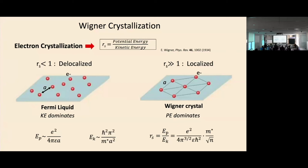Quantitatively, the potential energy scales with e² over a, modified by the dielectric constant, where a is the characteristic distance between electrons. The kinetic energy scales with p² over 2m, so it scales with 1 over a². It is easy to show that R_S has an expression proportional to the effective mass of electrons. And it scales with the distance between electrons, which is the square root of N.